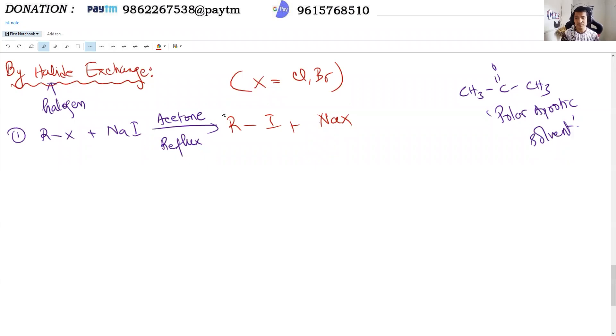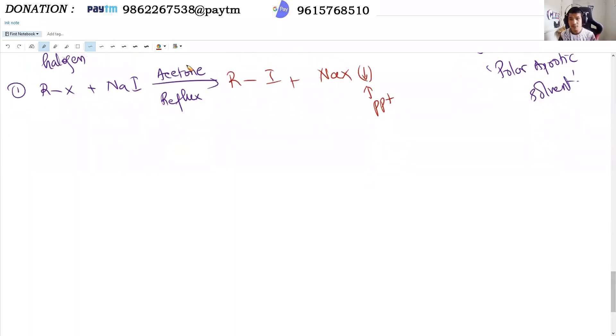When sodium iodide reacts, NaCl forms and precipitates out in the acetone. This happens because acetone is a polar aprotic solvent, and the precipitation of NaCl drives the reaction forward. The precipitate forms as a solid that can be separated.